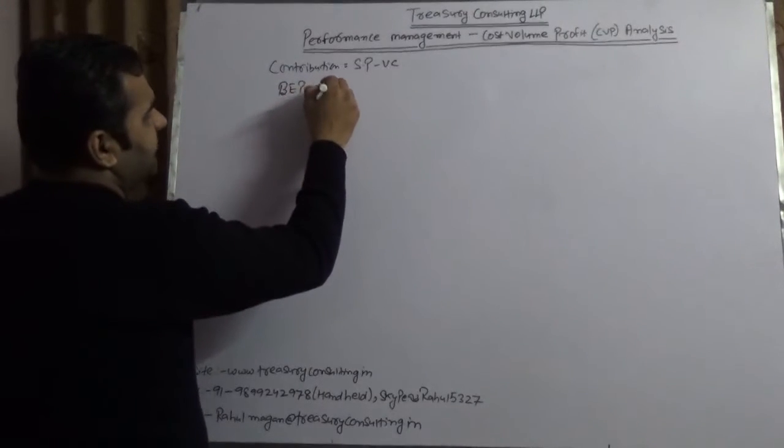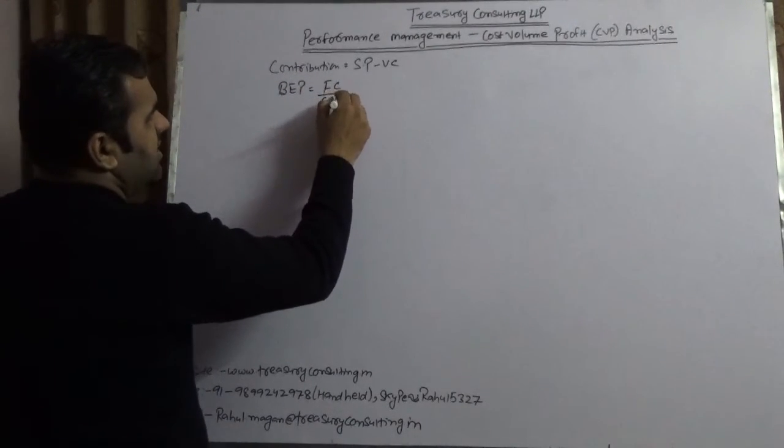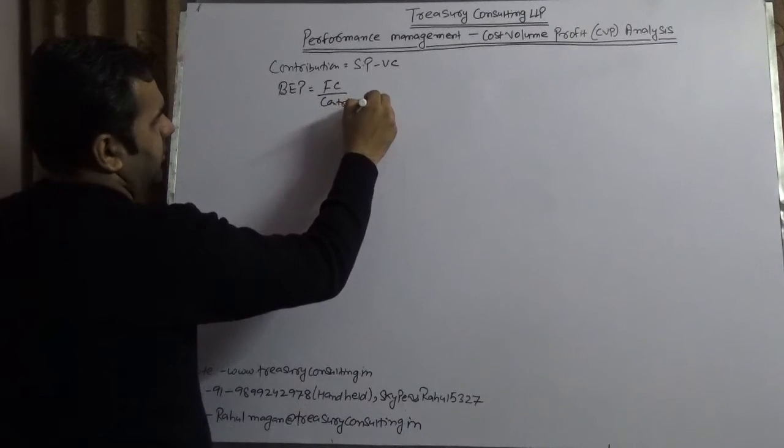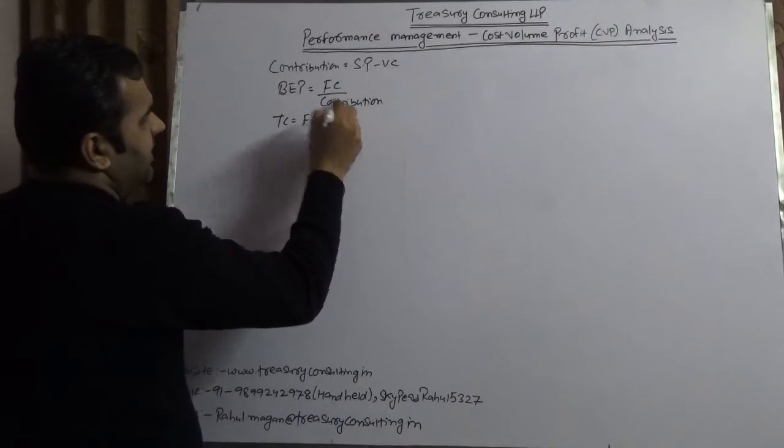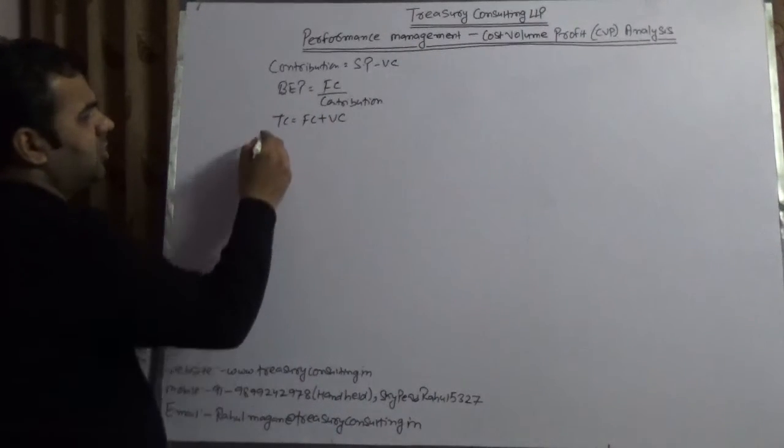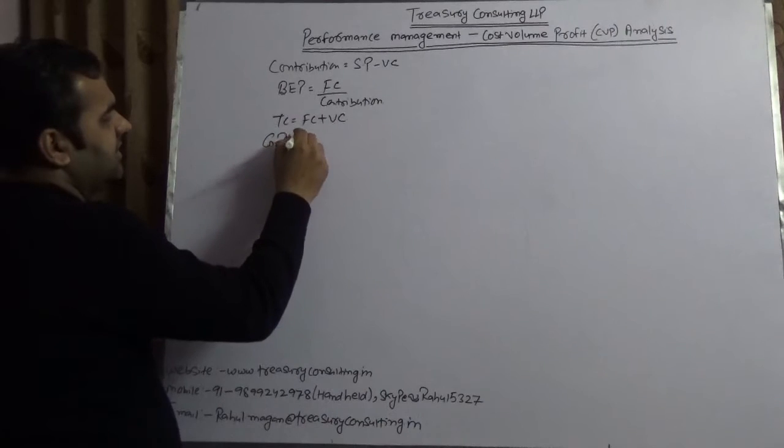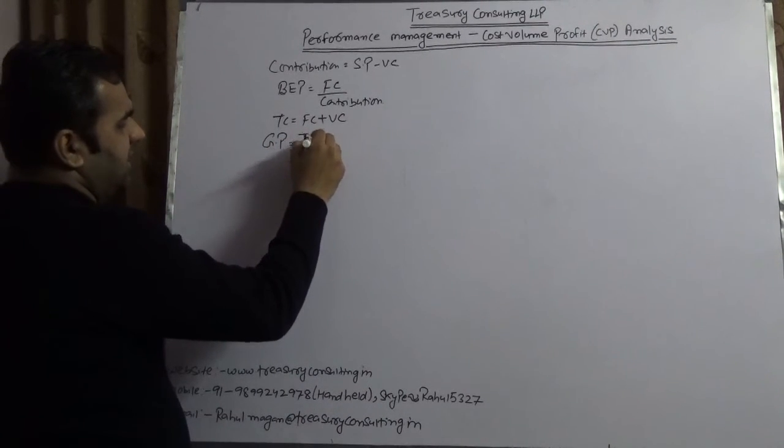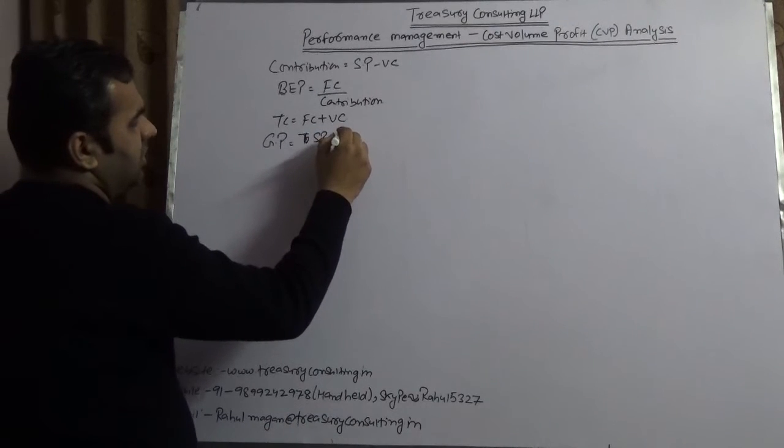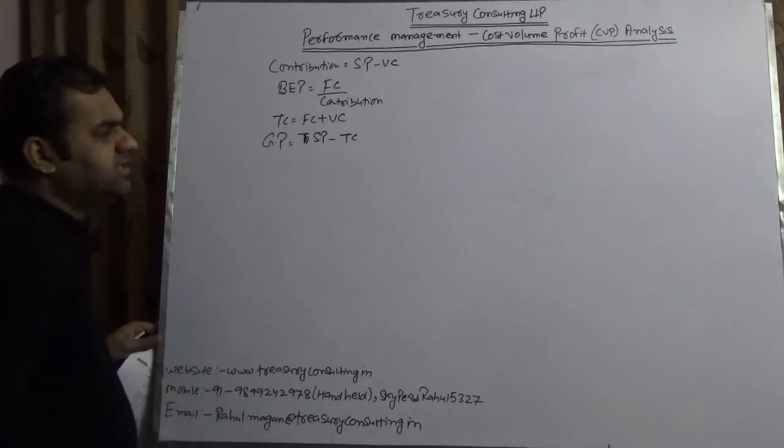What is Total Cost? Total Cost is Fixed Cost plus Variable Cost. What is Gross Profit? Gross Profit is Selling Price minus Total Cost. Now let us move one by one.